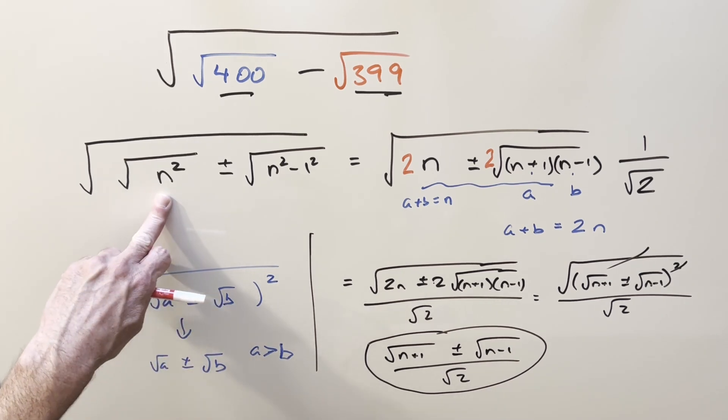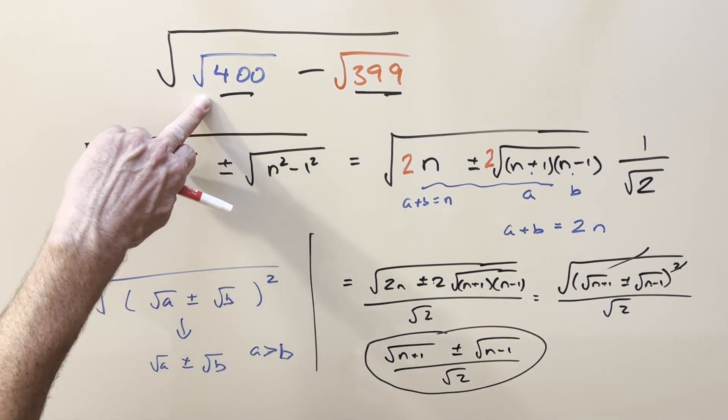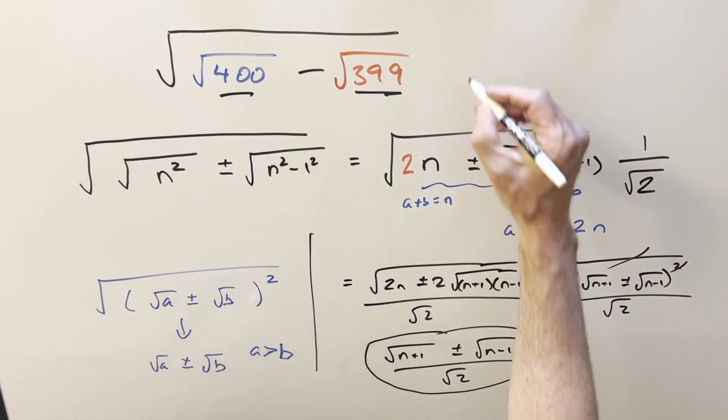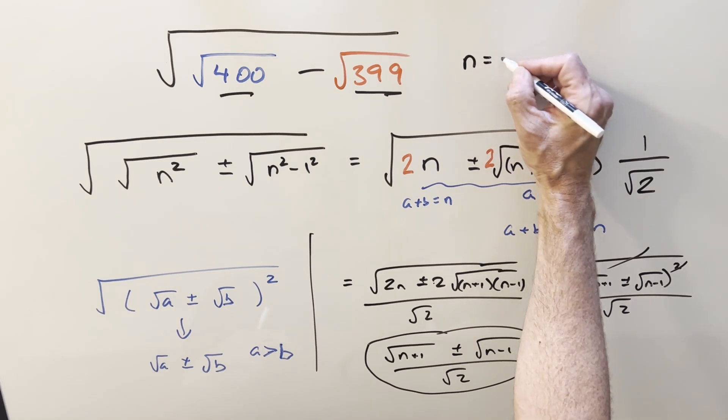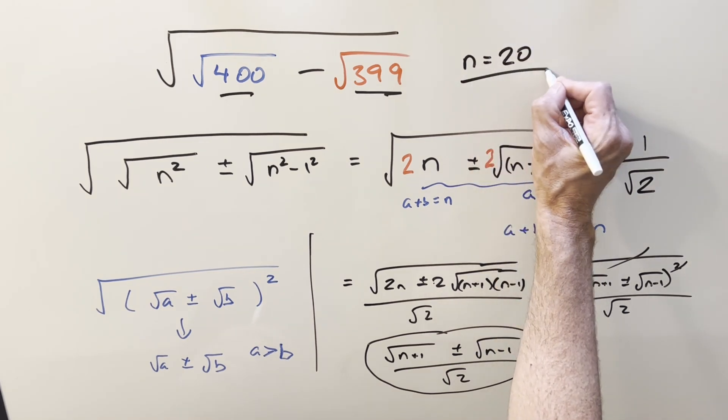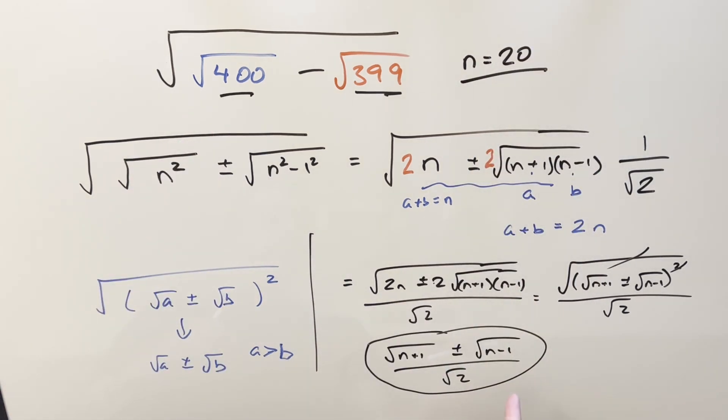If we just look back to our starting point where we started with this n squared, where the n squared is 400. So for our problem, we just have n equal to 20 in order to get 400. And we just need to use this formula on it.